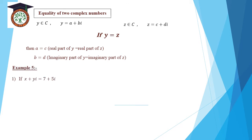Example 5: if x plus yi equals 7 plus 5i. Since these are equal complex numbers, the real parts must be equal and the imaginary parts must be equal. Then x equals 7, and yi equals 5i, so y equals 5.